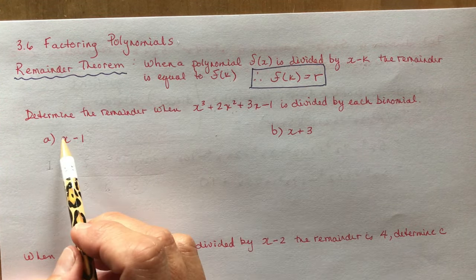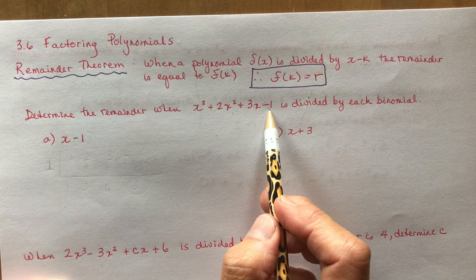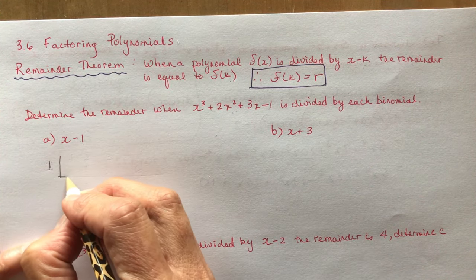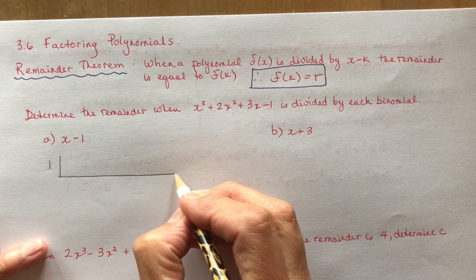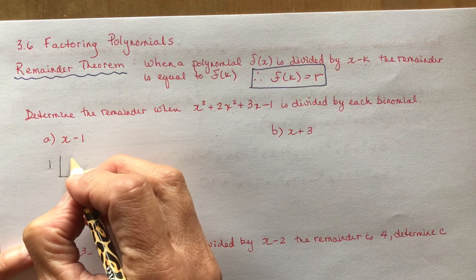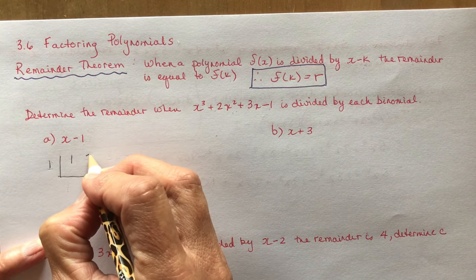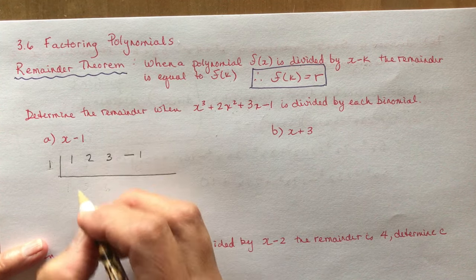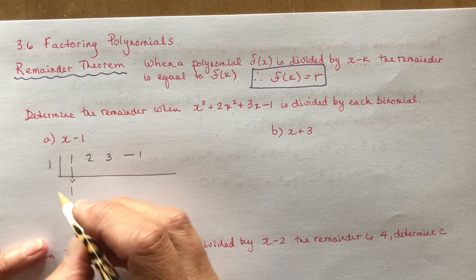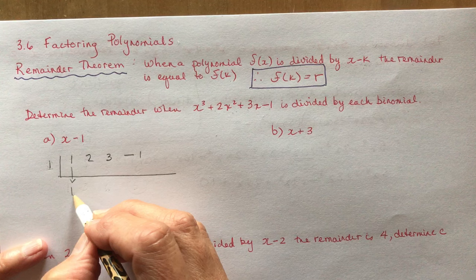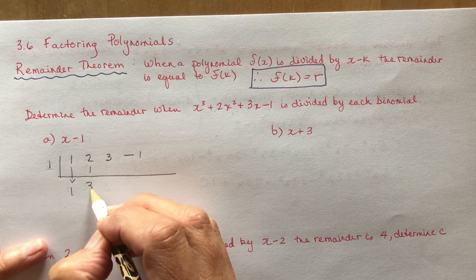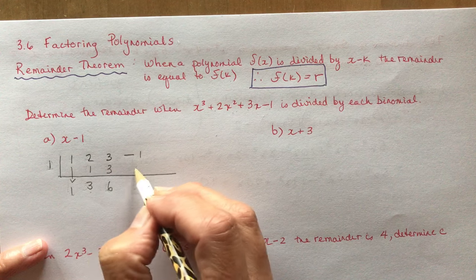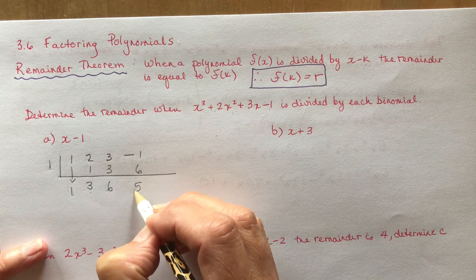So if we want to divide this polynomial by x minus 1, I'm going to do synthetic division first just to show you that it is actually true. I plug in the coefficients 1, 2, 3, and minus 1. Bring down the 1 and multiply. 1 times 1 is 1, add them together: 3. 3 times 1 is 3, add them together: 6. 6 times 1 is 6, add them together: 5.